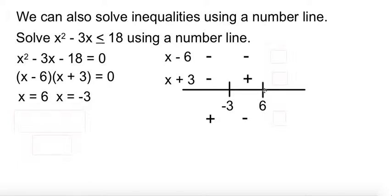And then pick any number out here. I'm going to pick 500. It's bigger than 6, so I can pick it. 500 minus 6 is 494, positive. 500 plus 3 is 503, positive. Positive times positive is positive.